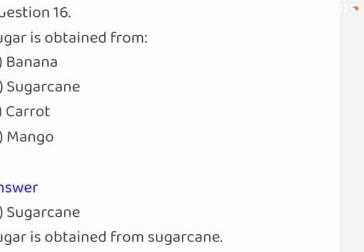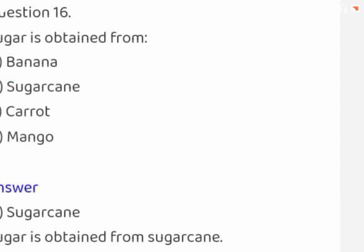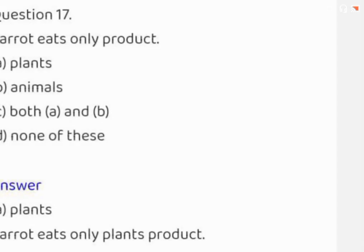Sugar is obtained from: banana, sugar cane, carrot, or mango. The correct answer is sugar cane. Parrots eat only: plants, animals, both A and B, or none of these. The correct answer is plants.